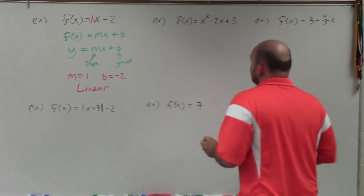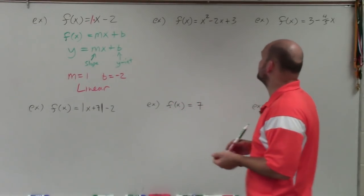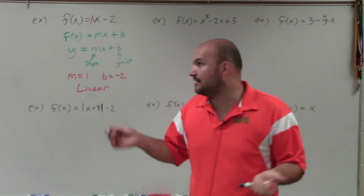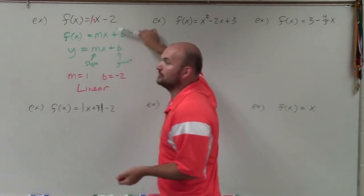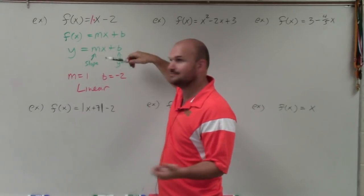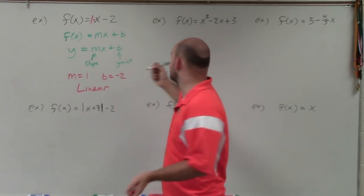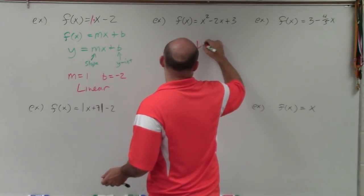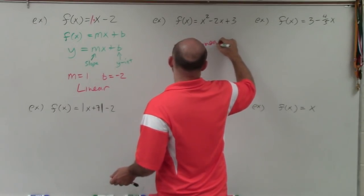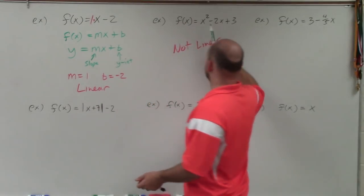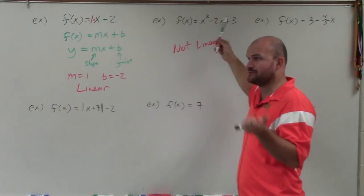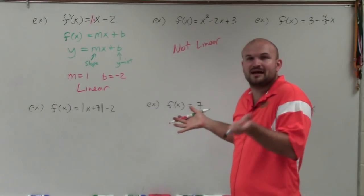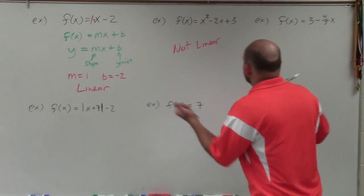In the next example, I have f of x equals x squared minus 2x plus 3. There's no x squared in the linear form, so I don't even need to figure anything — not linear. The other way to look at this is you have two variables: x squared and x. We don't graph a line with x squared and x, so that's not going to work.